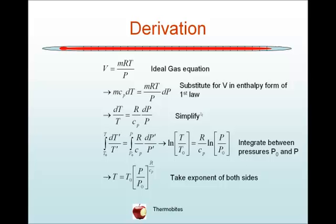We can write the ideal gas equation in terms of the volume, written as mRT/P, and substitute that into the enthalpy form of the first law, written as mcₚdT = mRT/P dP.